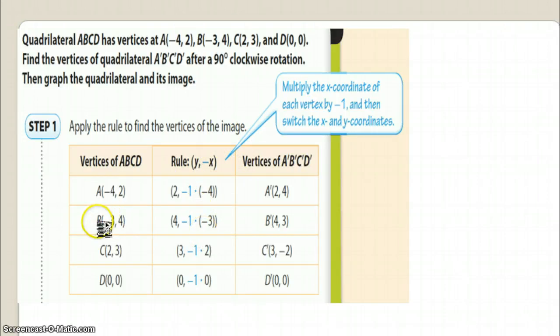So here B, B coordinates is a negative three comma four. First thing we want to do is multiply x by negative one, it's going to give me a positive three, and then you switch them. So now B prime will become four comma three. Okay. Multiply first then switch them.